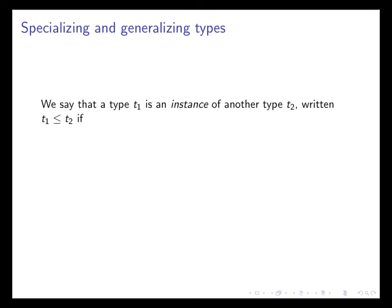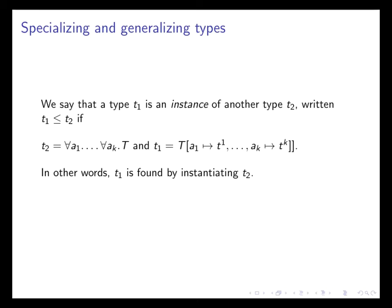We also need to be able to say that some type is more specialized than another type, or that some type is more general than another type. We would say that a type T1 is an instance of another type T2. We write T1 is less than or equal to T2, if it's the case that T2 is a type scheme, and we found T1 by instantiating the variables in the type scheme, A1 up to AK, with some concrete types. So in that case, T1 is an instance of another type. We instantiated the type variables.